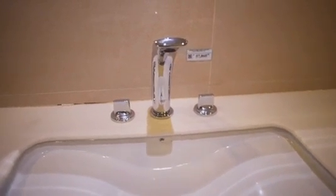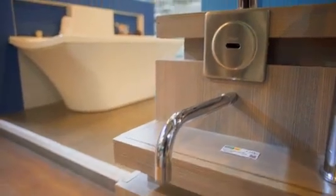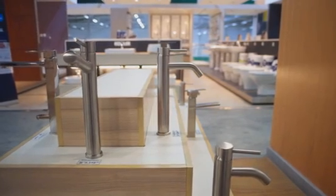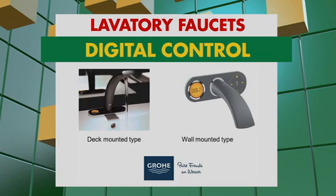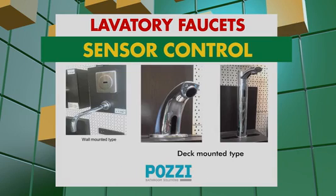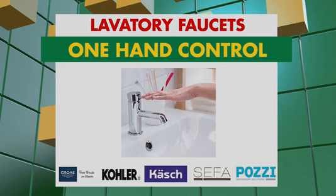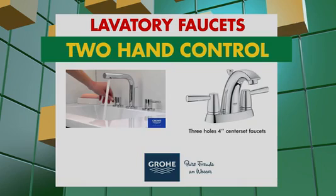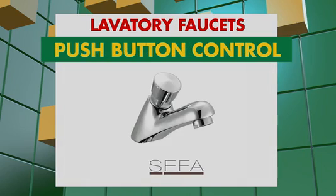Ang mga laboratory faucets ay meron ding iba't-ibang paraan ng pagkontrol o ng paggamit: digital control faucets, available sa Grohe brand; sensor control faucets, available sa Grohe, Kohler, at Posee brand; 1-hand control faucets, available sa Grohe, Kohler, at Posee brand; 2-hand control faucets, available sa Grohe at Kohler brand; at push-button control faucets, available sa Sefa brand.